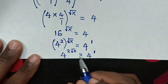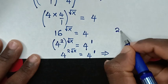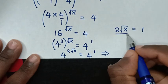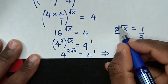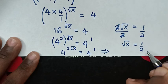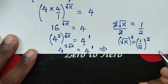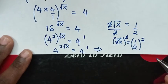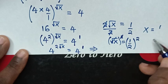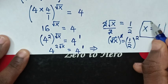Now we have the same base of 4, so we compare the powers. Then 2 times square root of x is equal to 1. In the next step we divide both sides by 2, so this and this cancel. Then square root of x is equal to 1 half. To find the value of x, we square both sides: this square cancels the square root. Then x equals 1 squared over 2 squared, which is 1 over 4. So x = 1/4 is the final answer.